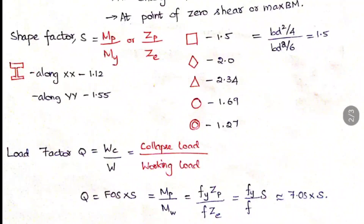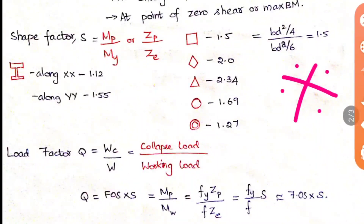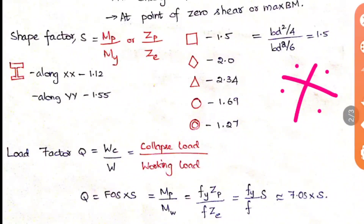The next very important concept is the shape factor. Questions on shape factor appear regularly — sometimes twice in a single exam paper. Shape factor is the ratio of plastic moment to yield moment, or equivalently plastic modulus ZP divided by elastic section modulus ZE. For a rectangular section, ZP is BD²/4 and ZE is BD²/6, so the shape factor is (BD²/4) ÷ (BD²/6) = 1.5.